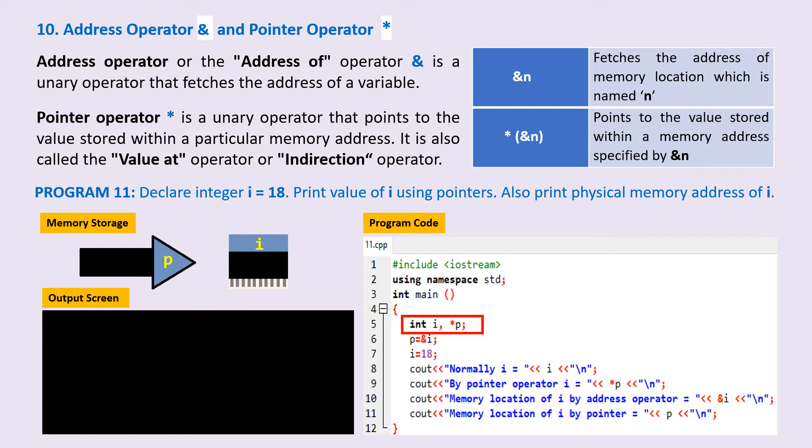On line 6, we have p equals ampersand of i. This means store the physical address of i to the pointer p. So the physical address of i is stored in the pointer p.